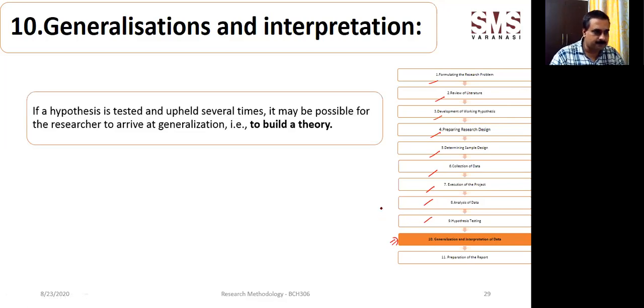If a hypothesis is tested and upheld several times, it will be possible for the researcher to arrive at a generalization. This is what I was talking about in previous lectures - to build a theory. If the things you have collected or concluded through the data match with the hypothesis, and hypothesis testing has been done with the same kind of results coming several times, that means we can generalize that result to a larger population.